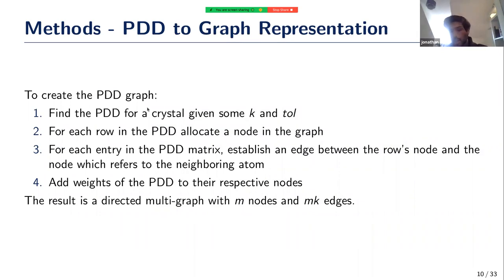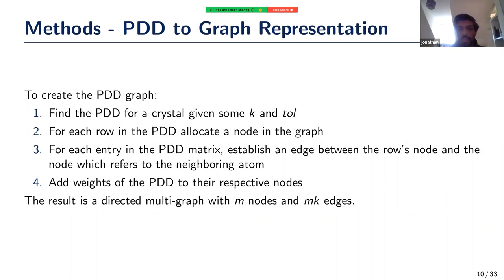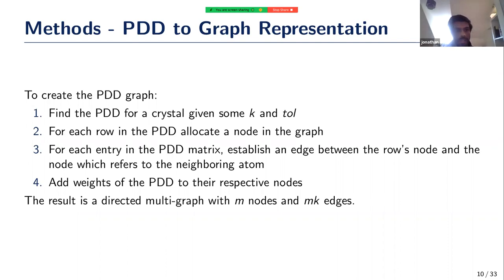To turn the PDD into a graph, for a given crystal we find the PDD for parameter k nearest neighbors and some tolerance for collapsing. For each row in the collapsed PDD we allocate a node in the graph, and for each entry — representing Euclidean distance to a neighbor — we establish a directed edge between that row's node and the node referring to that neighbor. If the neighbor falls outside the original unit cell, we find the node referring to that atom under translation. Finally, we add weights to the nodes corresponding to the PDD weights. The result is a directed multigraph with m nodes and mk edges.